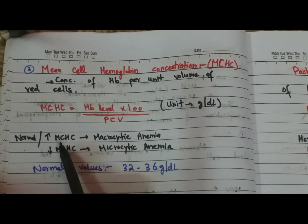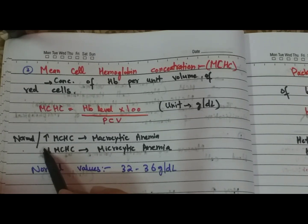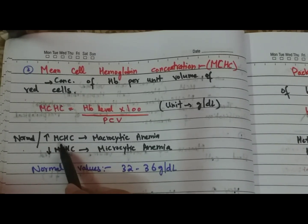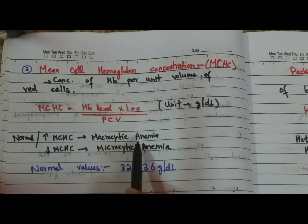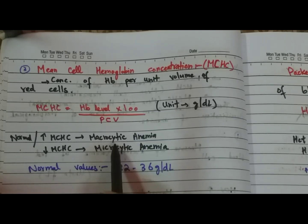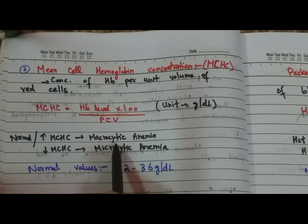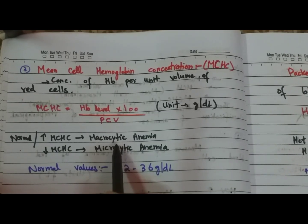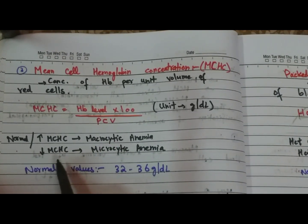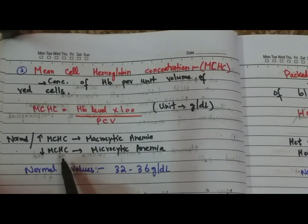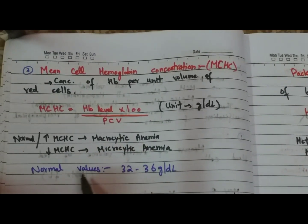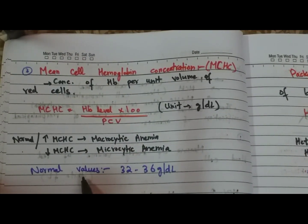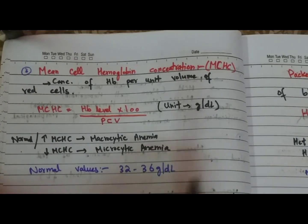The mean cell hemoglobin concentration is normal or increased in case of macrocytic anemia, because the cells are large in size and the concentration of hemoglobin is more. The mean cell hemoglobin concentration is decreased in case of microcytic anemia.